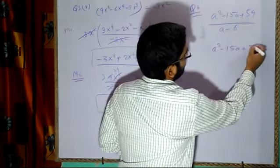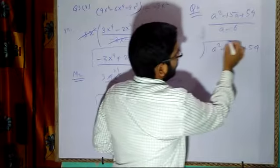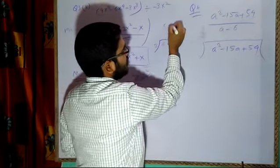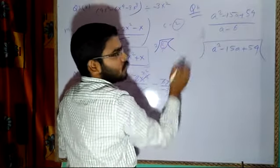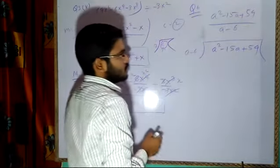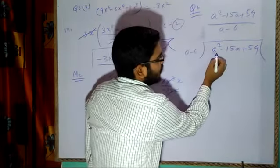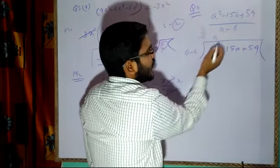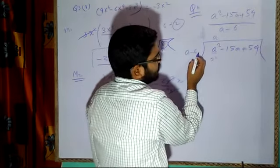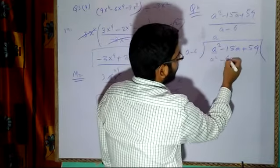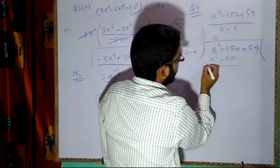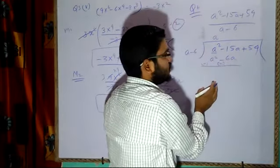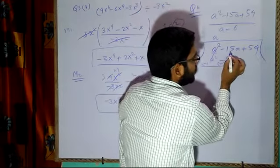See this slowly and don't take pressure. First write it like a regular division: the divisor is a minus 6 and the dividend is a² minus 15a plus 54. Ask: a should be multiplied how many times to get a²? It should be a times, so put a in the quotient. Then a into a gives a², and a times minus 6 gives minus 6a. Now subtract: a² minus a² cancels, and minus 15a plus 6a gives minus 9a. Bring down 54.